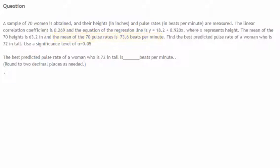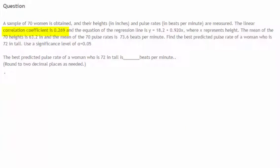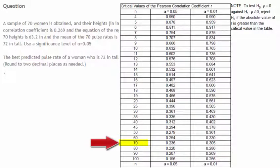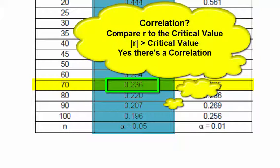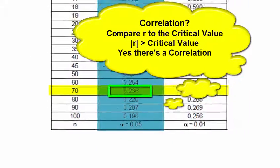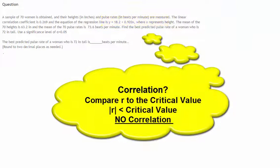The rule for determining if there is a correlation, given the correlation coefficient, the sample size, and the level of significance, is to compare the r value — for example, 0.269 in this case — against the critical value of the Pearson correlation coefficient from the table. Here, with a sample size of 70 and alpha of 5%, that critical value is 0.236. The rule is: if the absolute value of the correlation coefficient is greater than the critical value, then there is indeed a correlation and we use the regression line. If the absolute value is less than the critical value, there is no correlation, and the best predicted value is simply the mean of the y values.